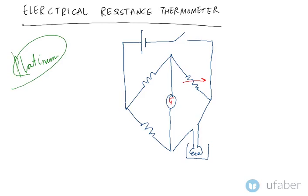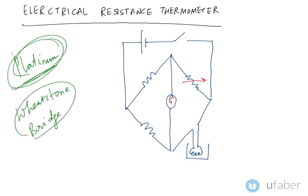This platinum wire is incorporated in a Wheatstone bridge. What you see on the right hand side of your screen is basically a Wheatstone bridge, and this is the platinum wire that we are talking about. This electrical resistance thermometer, or platinum metal wire resistance thermometer, is quite accurate and very sensitive.